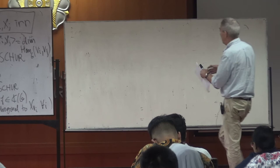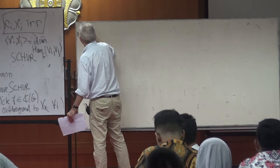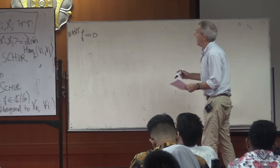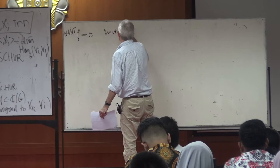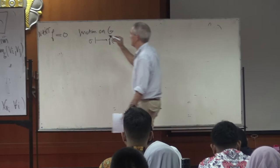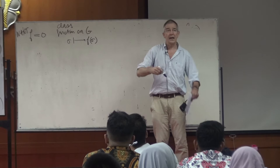F is a function on G, so for every sigma there is an F(sigma). Moreover it is a class function, so it is constant on conjugacy classes. Such a function can be made to act on representations. Here, F acts on any G-representation V: I take a vector v in V and map it to the sum over sigma in G of F(sigma) times sigma·v. That is the action.